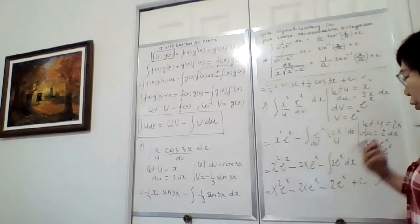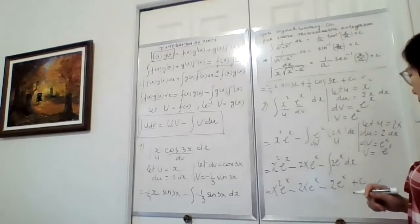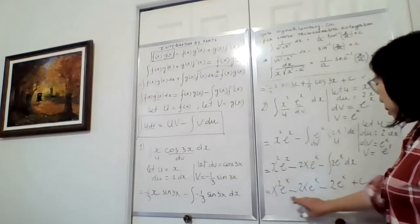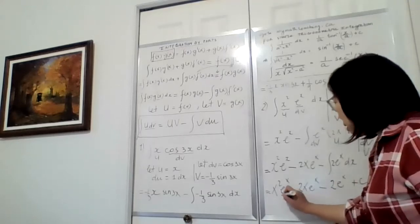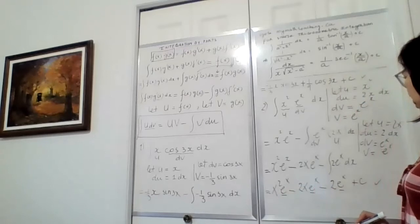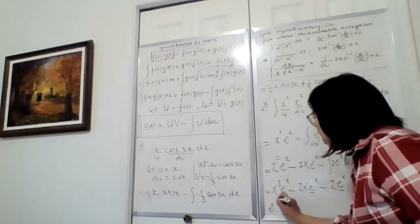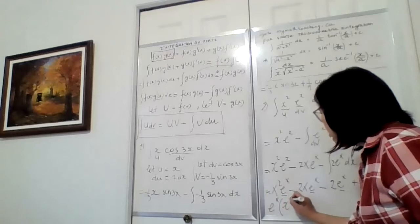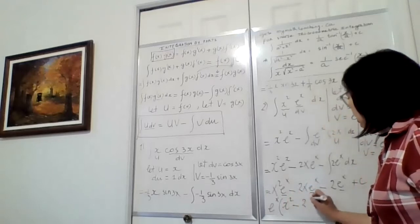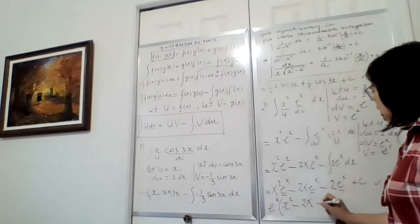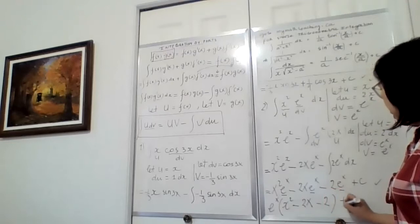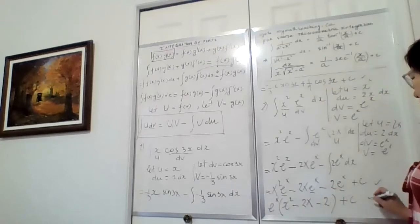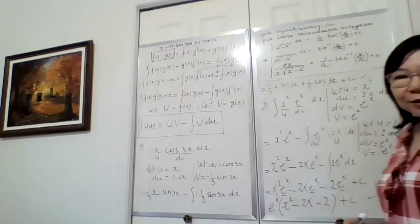So this is our answer. If we want to simplify it further because it looks messy, we can factor out the common factor eˣ. Taking out eˣ and opening the bracket, we have eˣ times (x² minus 2x minus 2). That looks cleaner and that's our final answer for the second question.